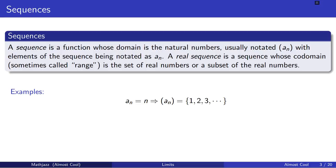Not all sequences have nice equations that represent them, but certainly the sequences that have equations are a lot easier to work with. Here's another example: b sub n equals 1 over n. That is an equation describing the nth element in the sequence. On the right hand side, the sequence b_n equals 1, 1 half, 1 third, and so on.